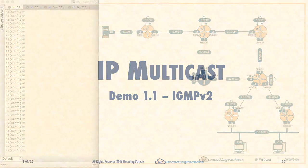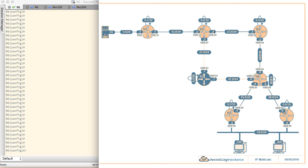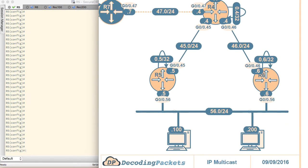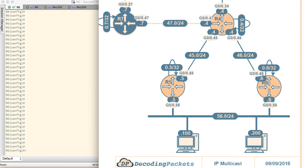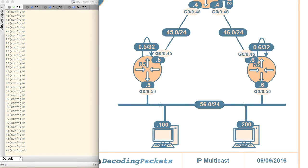Here is our topology that we've already demonstrated we would use. Remember, where is IGMP actually used? IGMP is used for the receivers to signal which groups they are interested in. So we need to concentrate on this part of the network — specifically R5 and R6, which are the last-hop routers — and look at the signaling the receivers perform with these routers.